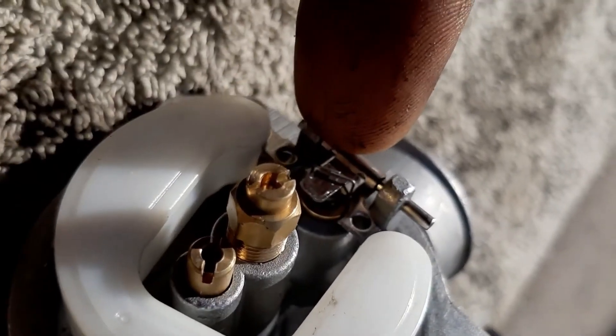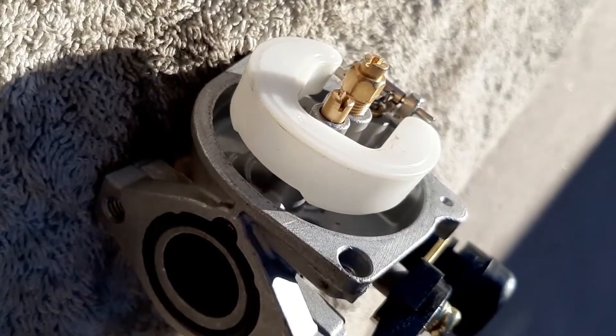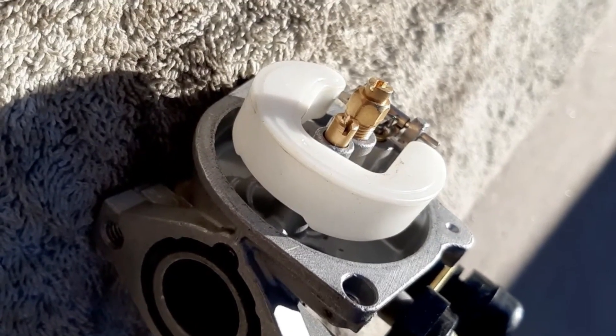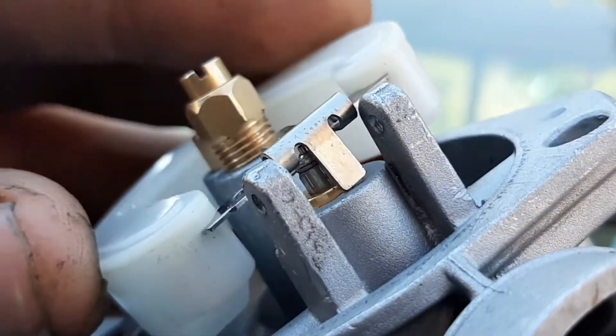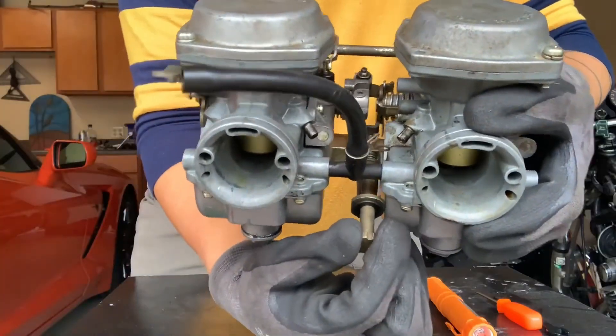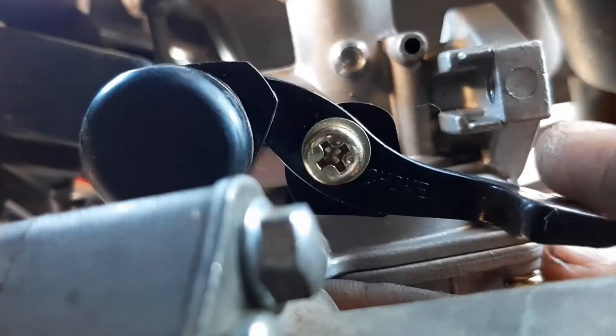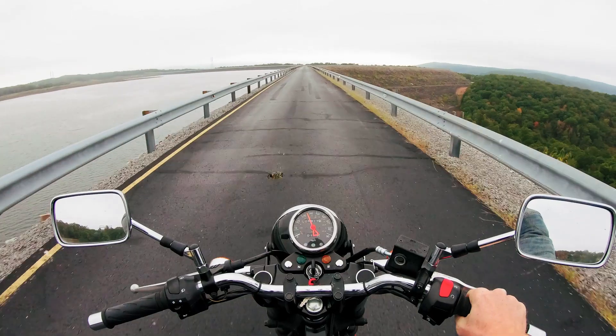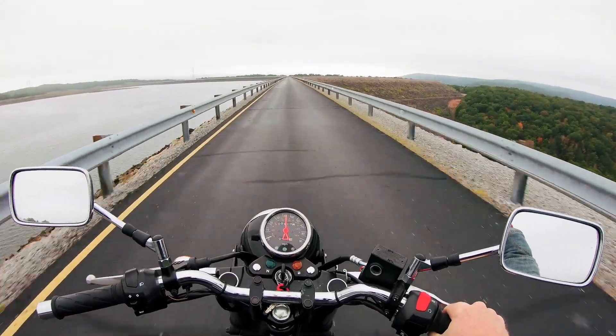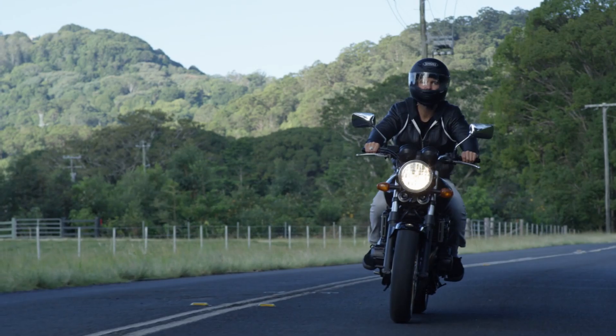If you need more power, open the throttle, more air rushes in, and more fuel gets pulled in too. It's reactive, mechanical, and oddly brilliant. Some carburetors even use multiple barrels, like a second stage kicking in when you're gunning it, giving better performance across different RPMs. But while it works, it doesn't adapt.